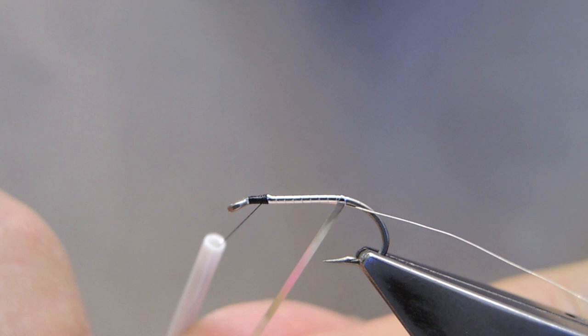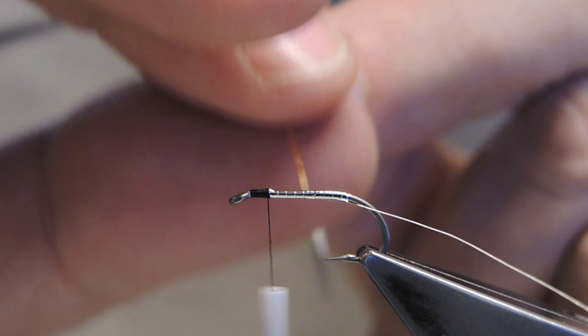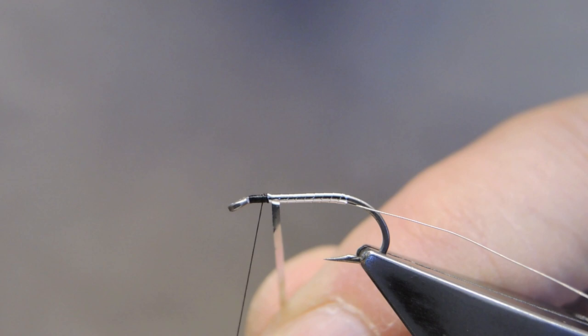And then reverse the direction and wrap touching turns again towards the eye. Here I will unwrap the thread and trim away that little tag.